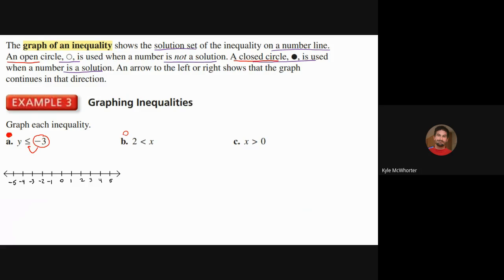So example A gets a closed circle, and examples B and C get open circles since they have no equal-to sign. For A, draw a closed circle at −3. Testing 0: is 0 ≤ −3? No. Testing −4: is −4 ≤ −3? Yes, it's less than. So draw the arrow going to the left.